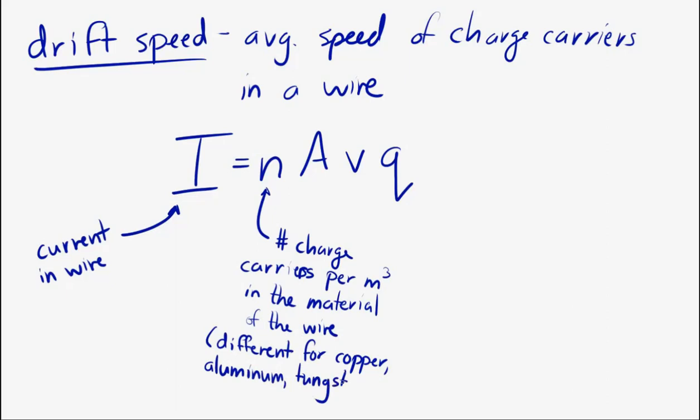Copper has a certain number of charge carriers per cubic meter. Aluminum has a different number of charge carriers per cubic meter. Tungsten would have a different value for that. Okay. A is the cross-sectional area of the wire in square meters. So, that cross-sectional area that I drew on that previous diagram, that's what I'm talking about here.